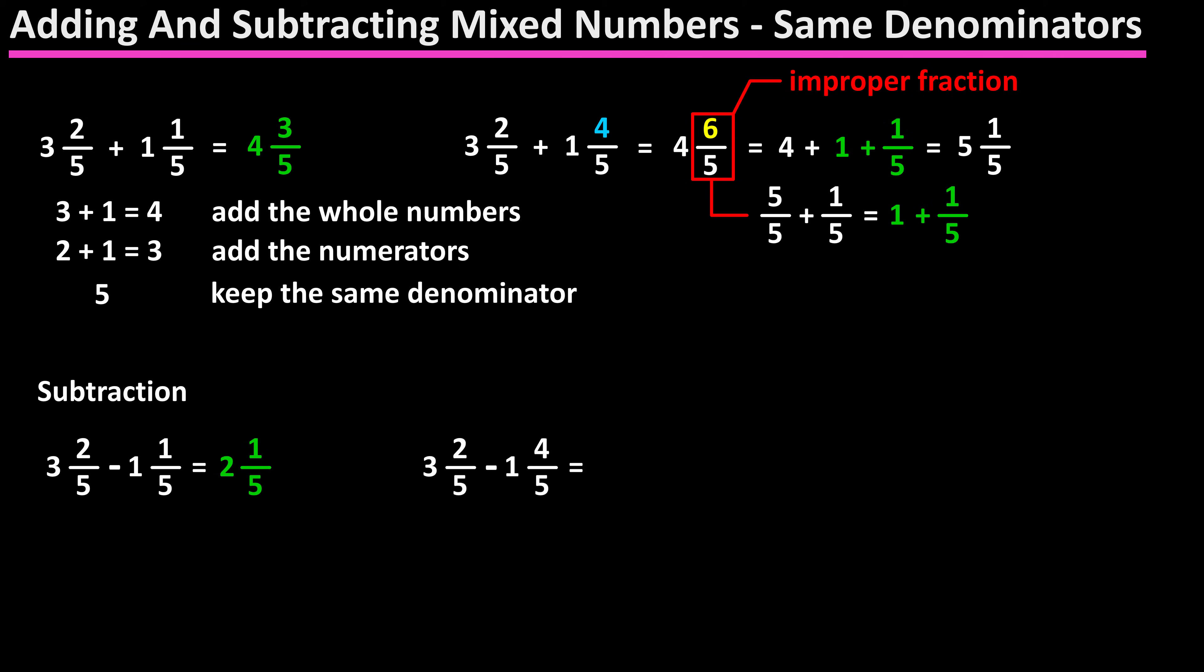If we were subtracting 3 and 2 over 5 minus 1 and 4 over 5, then it does require a little more work. In this problem, the numerator in the second fraction is greater than the numerator in the first fraction, as 4 is greater than 2, so we need to borrow from the 3,